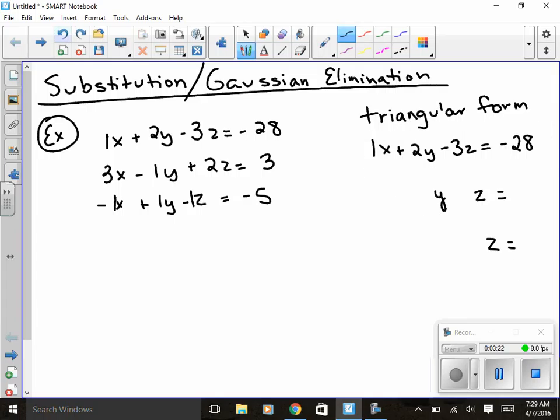And then the last one is just going to be a z, so it forms a triangle. That's the reason why it's called triangular form. How am I going to get this so I can have just a y and a z? I can get this by using elimination in order to get it so it's down to just a y and a z.